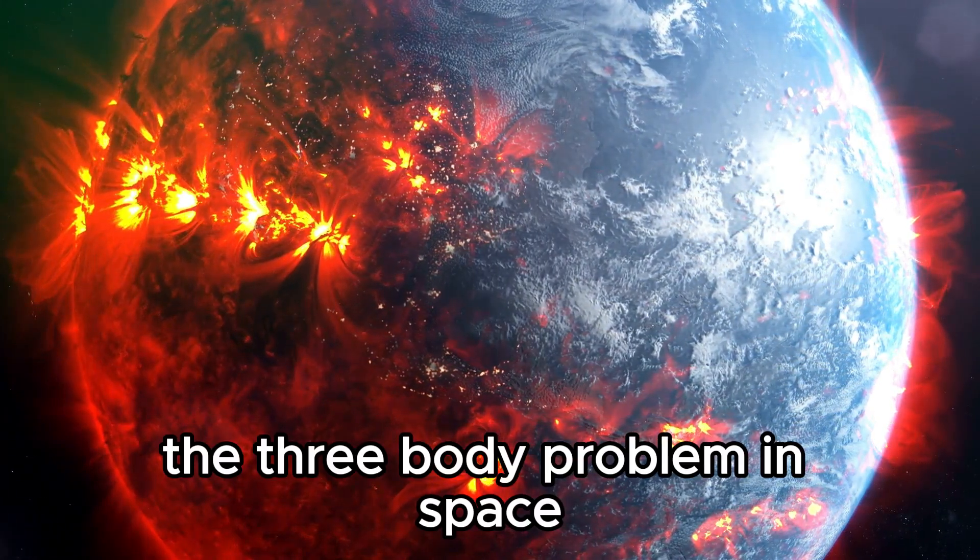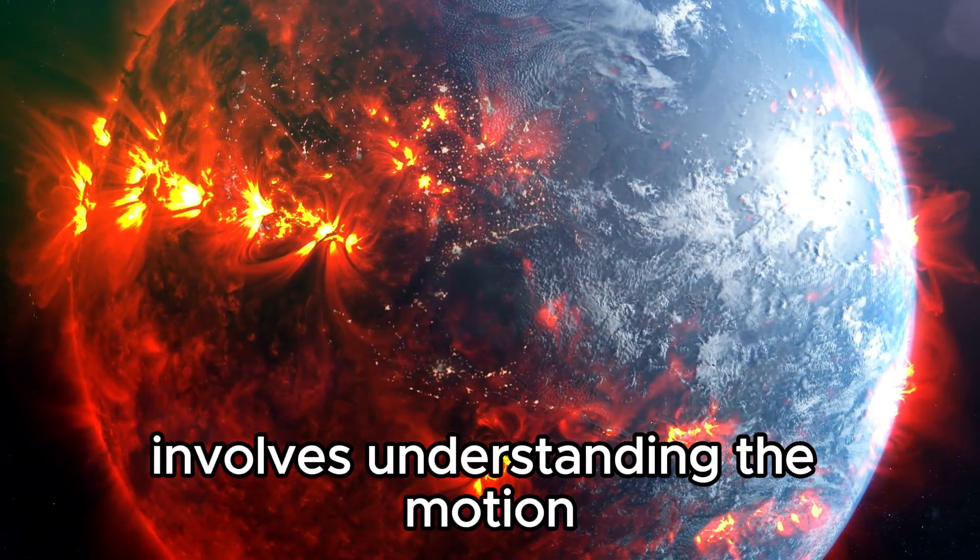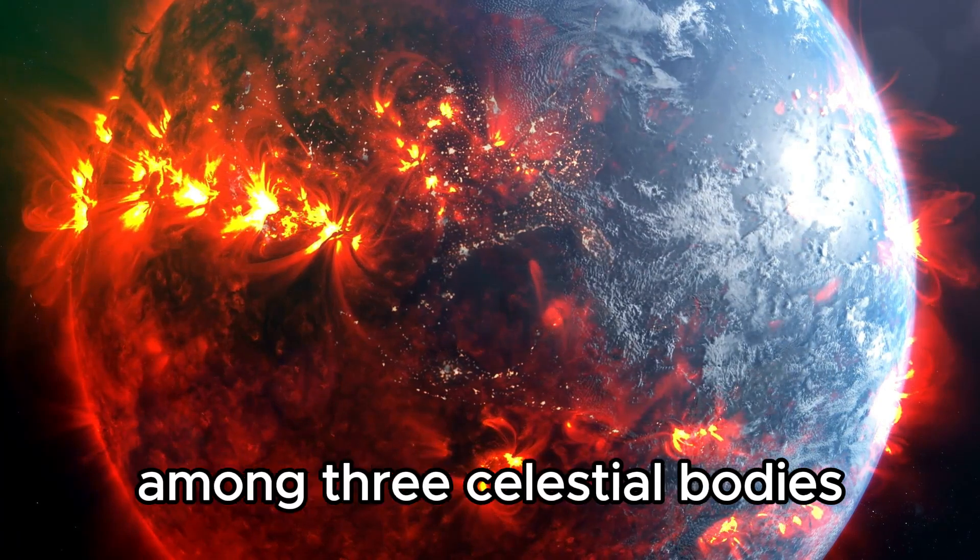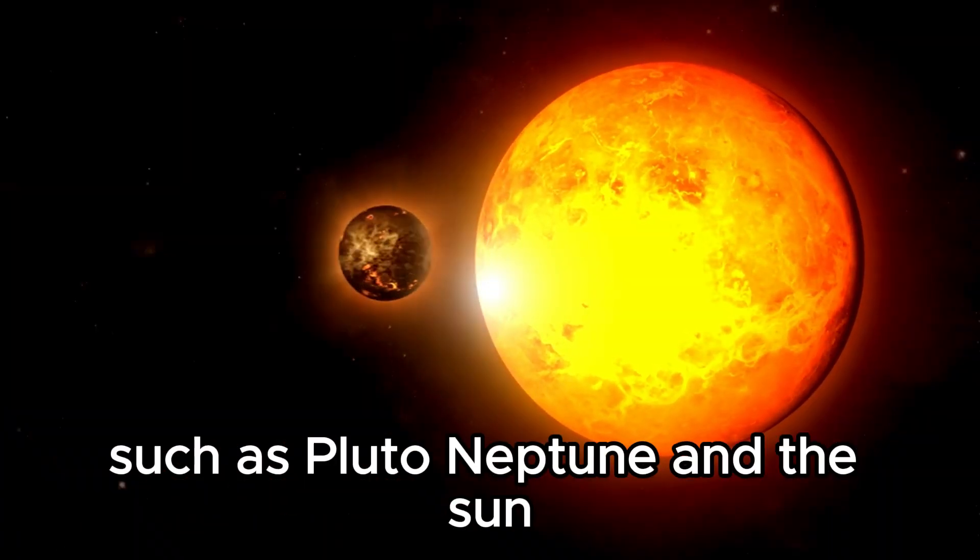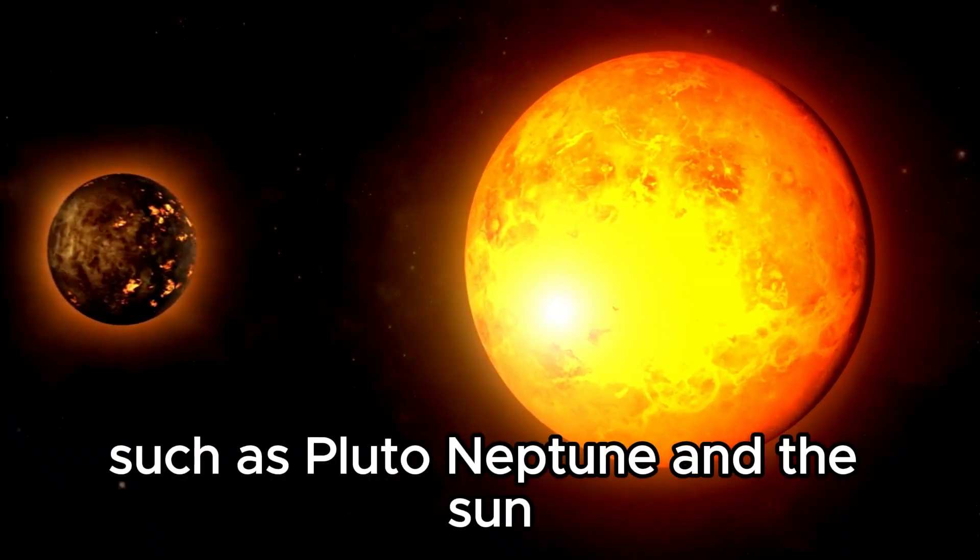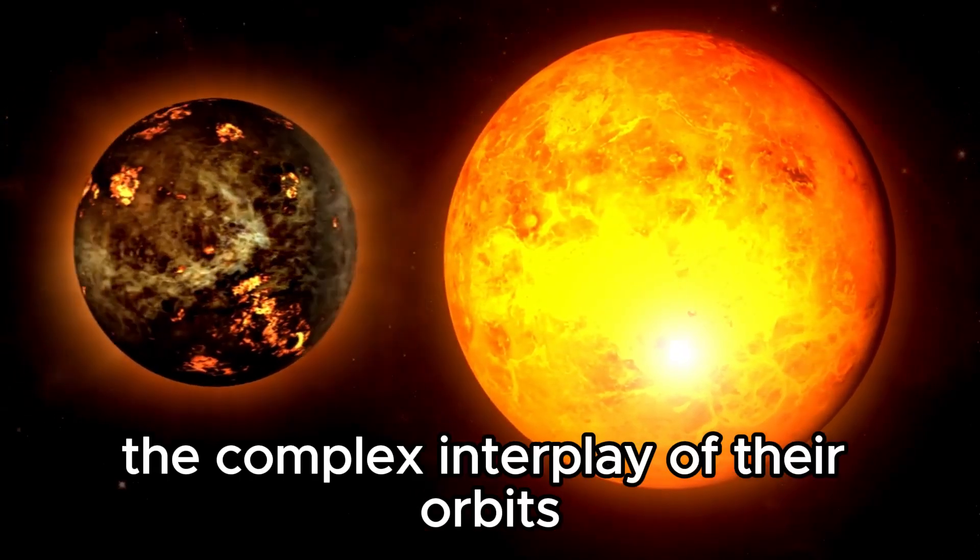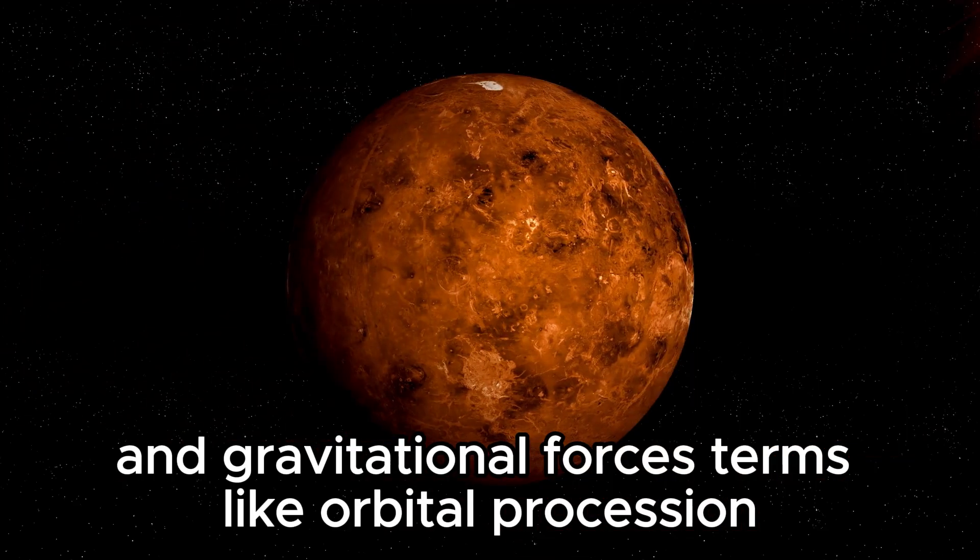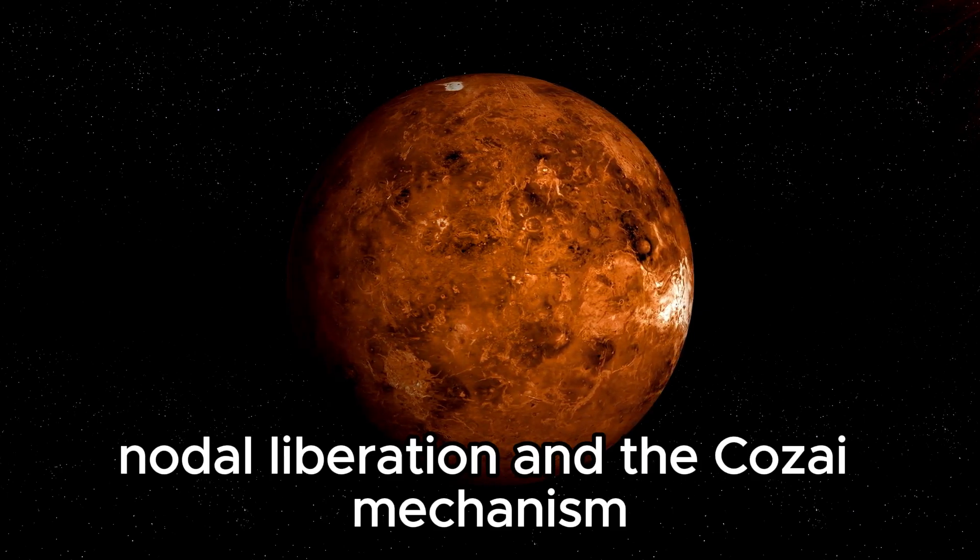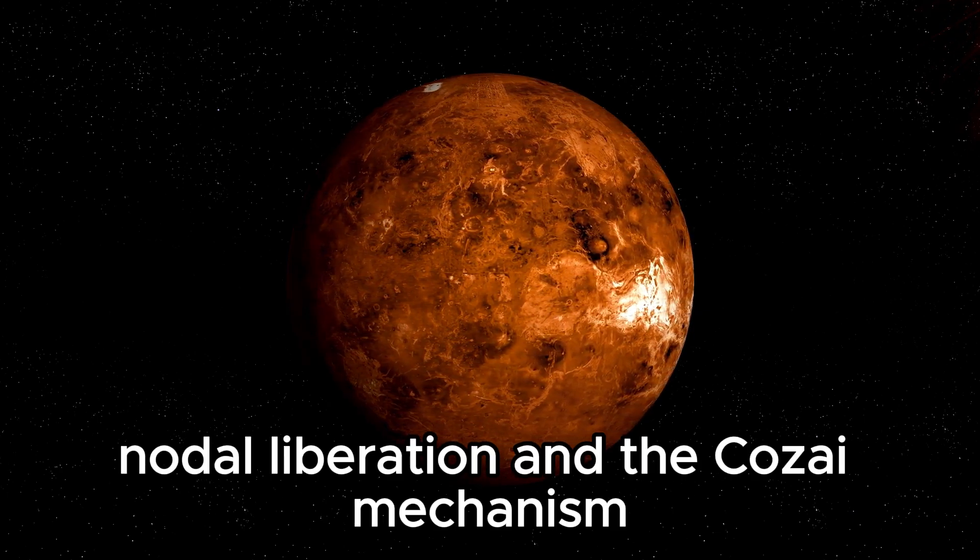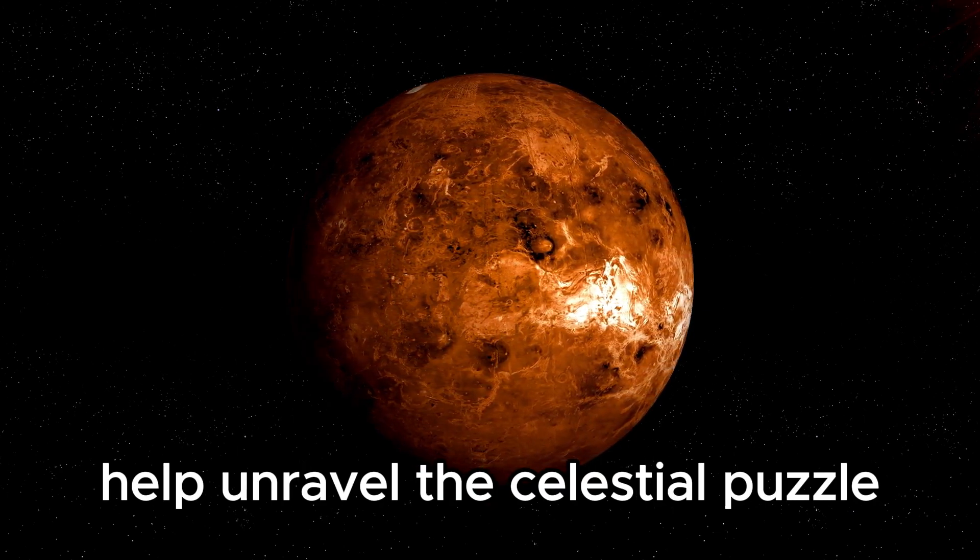The three-body problem in space involves understanding the motion and gravitational interactions among three celestial bodies, such as Pluto, Neptune, and the Sun. This problem explains the complex interplay of their orbits and gravitational forces. Terms like orbital precession, nodal libration, and the Kozai mechanism help unravel the celestial puzzle.